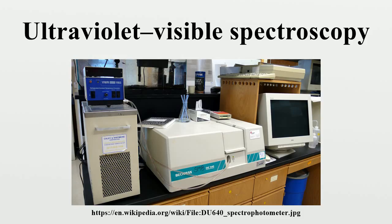Some double-beam instruments have two detectors, and the sample and reference beam are measured at the same time. In other instruments, the two beams pass through a beam chopper which blocks one beam at a time. The detector alternates between measuring the sample beam and the reference beam in synchronism with the chopper. There may also be one or more dark intervals in the chopper cycle, in which case the measured beam intensities may be corrected by subtracting the intensity measured in the dark interval before the ratio is taken. Samples for UV-Vis spectrophotometry are most often liquids, although the absorbance of gases and even of solids can also be measured. Samples are typically placed in a transparent cell known as a cuvette. Cuvettes are typically rectangular in shape, commonly with an internal width of 1 cm.